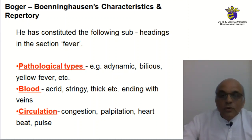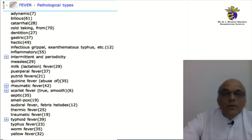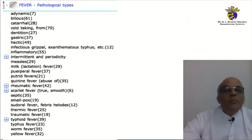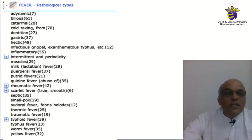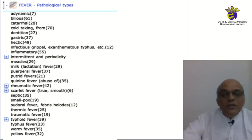This fever section goes on to elaborate and ease our practice. Going into further understanding of the pathological types listed, there are multiple pathological types. Some can easily be identified with current clinical practice — you can identify catarrh, dentition, inflammatory fevers, quinine fevers, rheumatic fevers, septic fever, smallpox, typhoid, typhus. If you are a serious student of repertory and wish to understand what yellow fever means, what typhus means, or what a putrid fever means, you will have to enroll at MHI to understand the meanings of these words and their application in clinical practice.